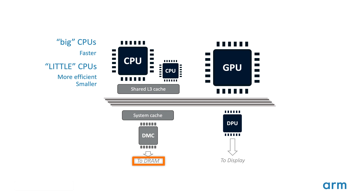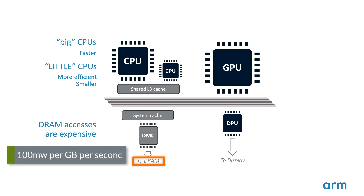The most important thing to know about DRAM is that accessing it is very energy intensive. A convenient rule of thumb for all-in power costs of a memory access is 100mW per gigabyte per second. So if you allocate a quarter of a 2-watt power budget to DRAM access, you only get 5GB per second to play with. At 60 frames per second, that's only 85 megabytes per frame — and this has to cover all the CPU, GPU, and DPU memory accesses.